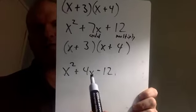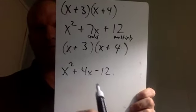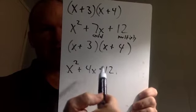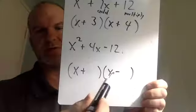It gets a little trickier when one sign is positive and one is negative. If your last term is negative, that means one of the numbers you were multiplying was positive and one was negative — that's the only way to get a negative product. So in our parentheses, one will be adding and one will be subtracting. The factor pairs that multiply to give 12 are: 1 and 12, 2 and 6, and 3 and 4.